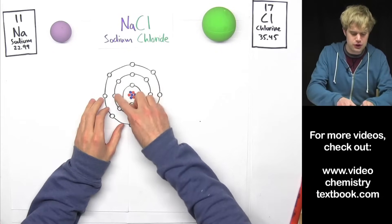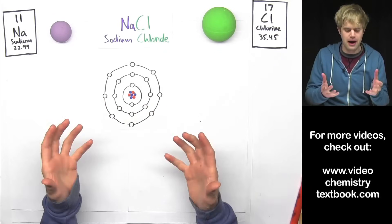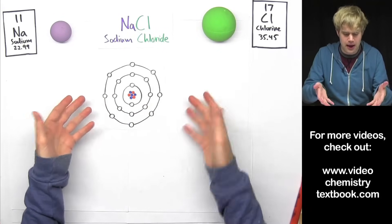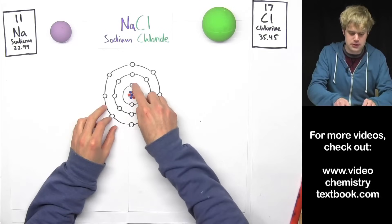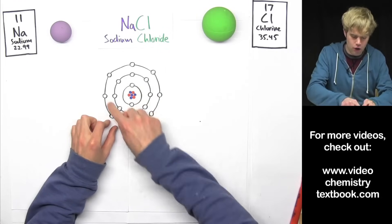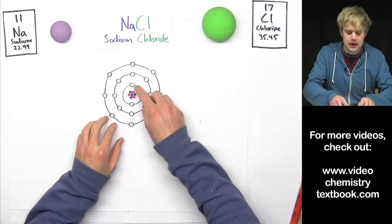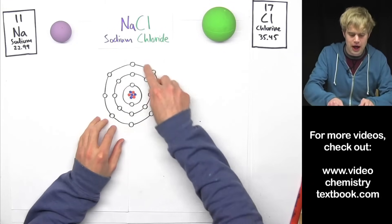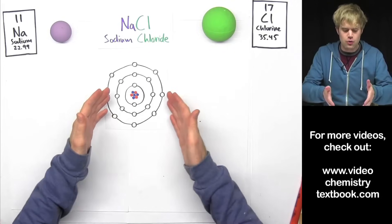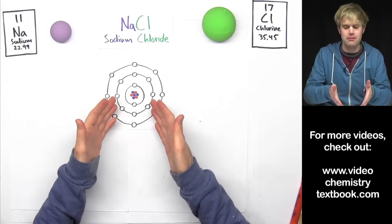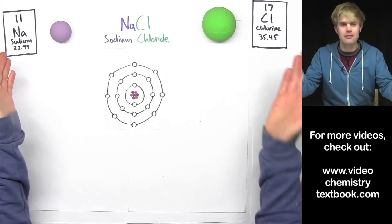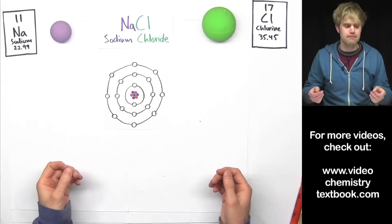Each one of these little circles represents a spot that an electron can live in in an atom, and you'll see that these little electron spots are arranged in rings around the nucleus of the atom. Each one of these rings is called a shell or an energy level. So we can use this diagram to figure out where the electrons live in sodium and where they live in chlorine.